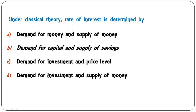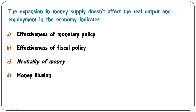Under classical theory, the rate of interest is determined by demand for money, demand for capital and supply of savings, demand for investment and price level, or demand for investment and supply of money? Under classical theory, rate of interest is determined by demand for capital and supply of saving. So B is the correct answer.